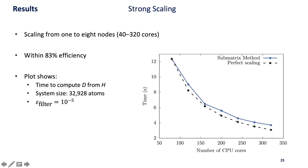We evaluated strong scaling going from 40 to 320 CPU cores. We compare against the theoretically perfect scaling and we stay above 83 percent efficiency during this entire scaling experiment.